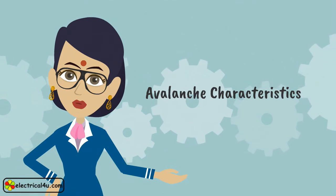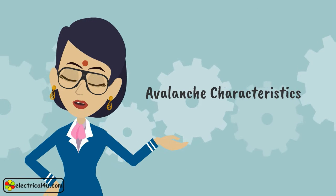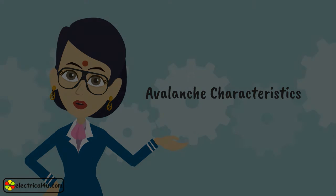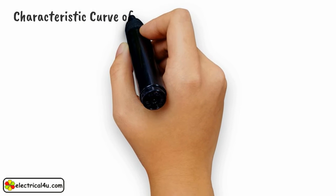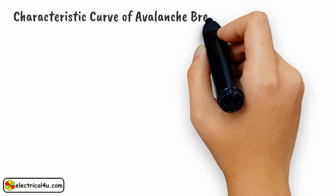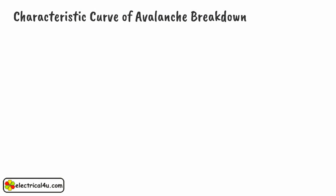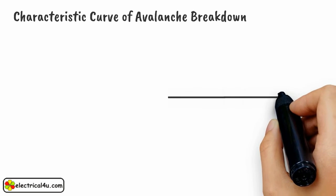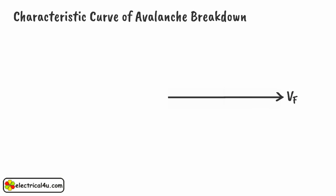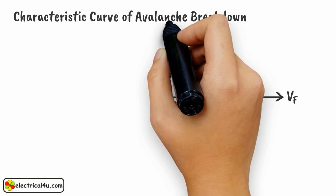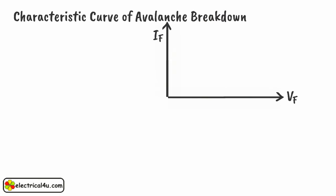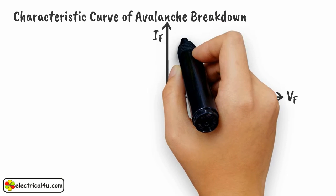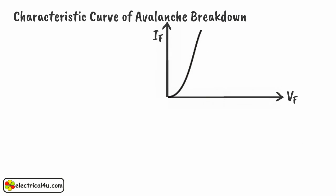Let us see the characteristic curve of Avalanche Breakdown. This portion of the characteristic curve shows a forward voltage VF and the respective forward diode current IF. This portion of the curve shows the current-voltage characteristics of a PN junction for the case of forward bias condition.